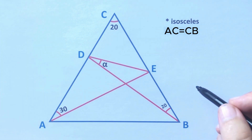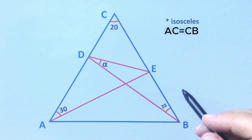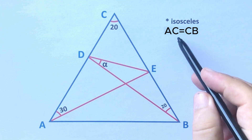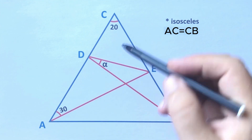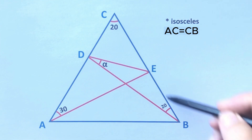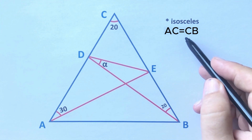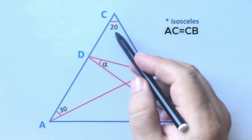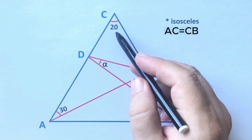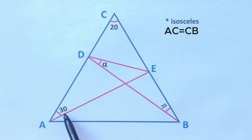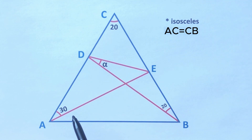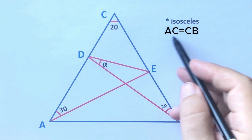In this video we have an isosceles triangle. AC and CB are equal, the apex angle is 20 degrees, and then here is 30 degrees, this angle is also 20 degrees, and alpha is asked.